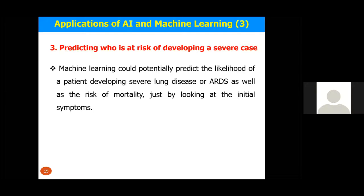The third scope is predicting who is at risk of developing severe symptoms. Based on initial syndrome data, we can predict whether a patient will have severe consequences, potentially leading to death. This type of prediction that computer scientists can develop will help doctors and our healthcare system.